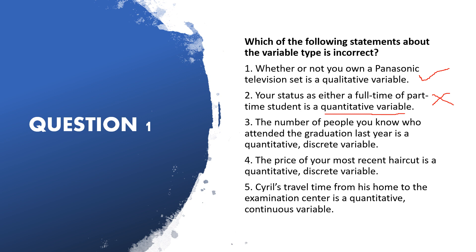Statement three: 'The number of people you know who attended graduation last year is a quantitative discrete variable.' This is correct because discrete variables arise from counting — you can count the number of people who attended. Statement four: 'The price of your most recent haircut is a quantitative discrete variable.' It is discrete because you can count how much money you spent. Statement five: 'Cyril's travel time from his home to the examination center is a quantitative continuous variable' — correct, because we are measuring time.